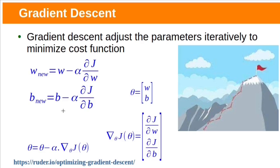We have already discussed gradient descent. Gradient descent adjusts the parameters iteratively to minimize the cost function. These are the weight and bias updation rules. If we denote this set of parameters with theta, then this would be the parameter updation rule. Here grad_J would be the partial derivatives of the cost function with respect to all parameters. Gradient descent updates parameters based on gradients, and these gradients are calculated based on the entire dataset, so it is also called full batch gradient descent.